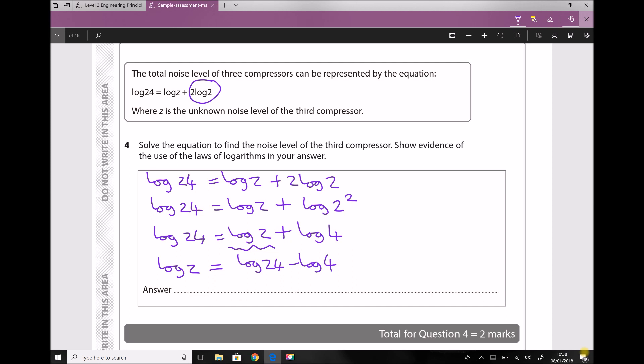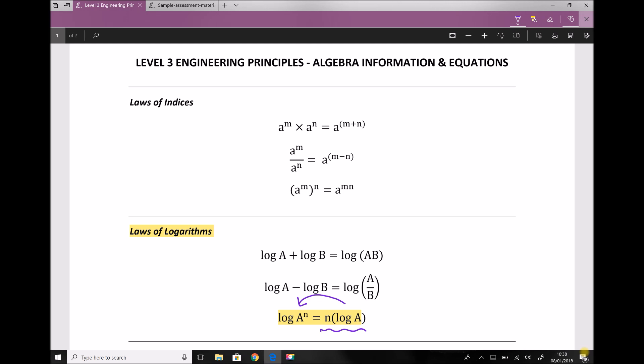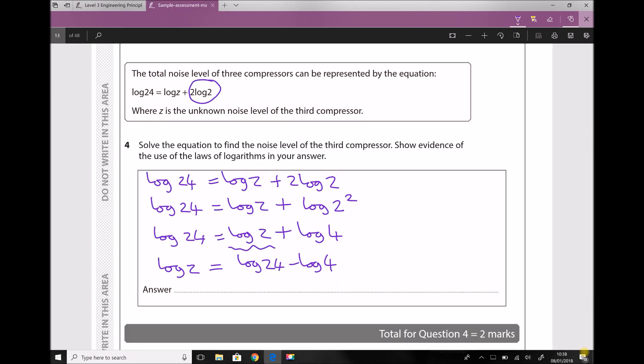So all I've done there is isolate the term that contains the variable we're trying to find. Now if we switch back to our log laws, the one that we're going to be applying next is this one here, where it states that log a minus log b is the same as log a over b.